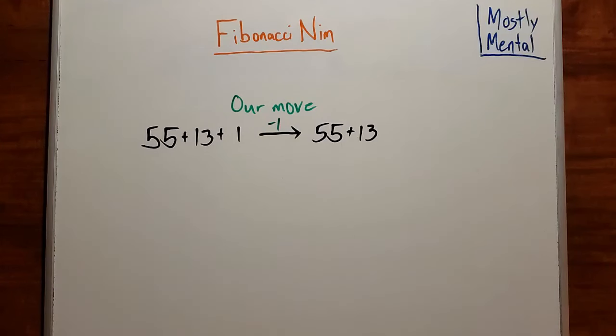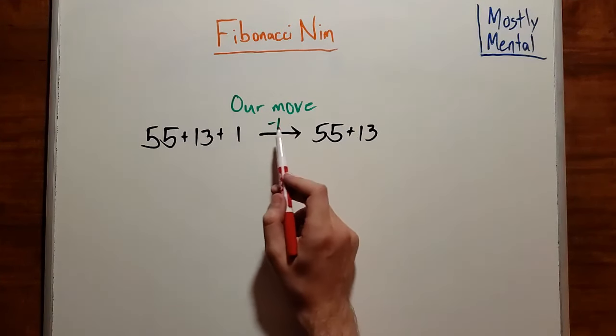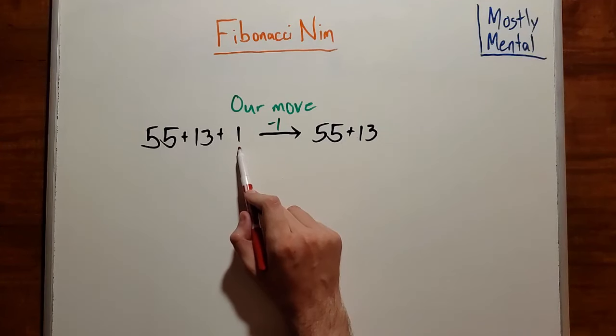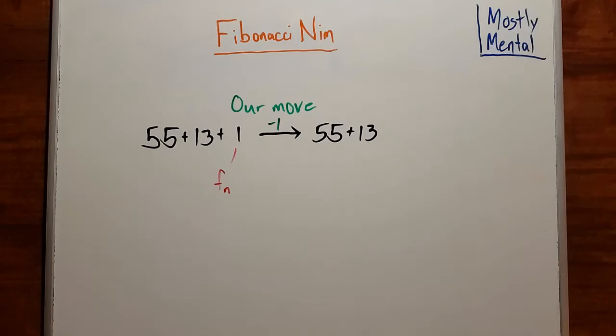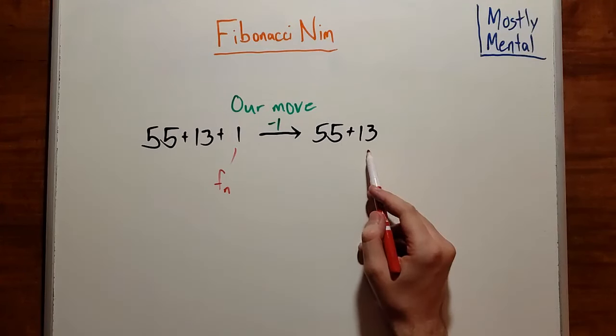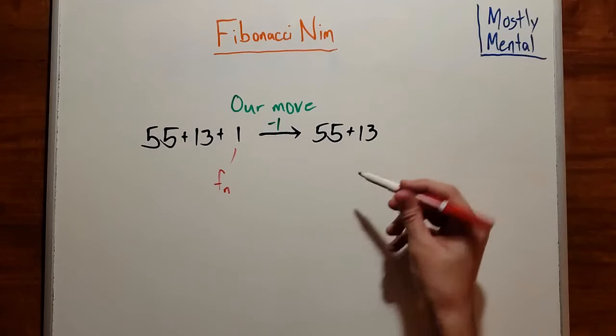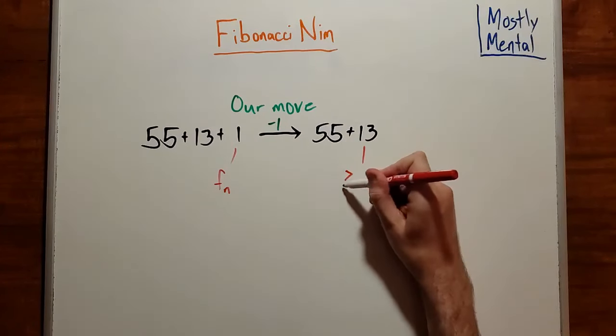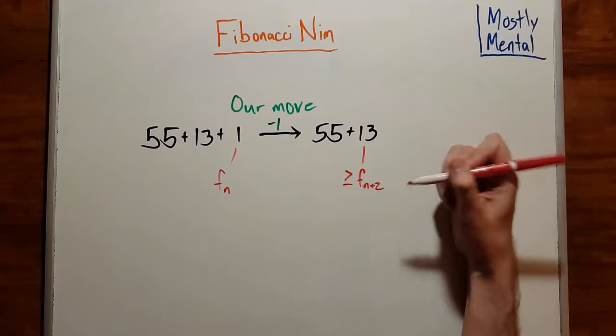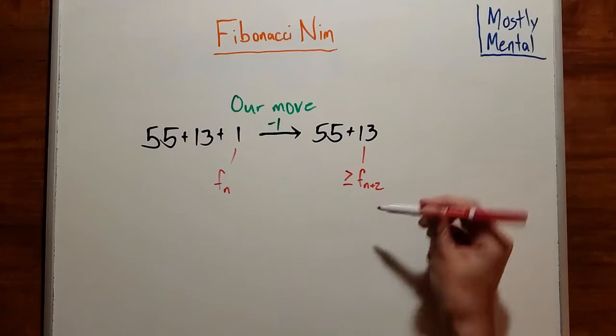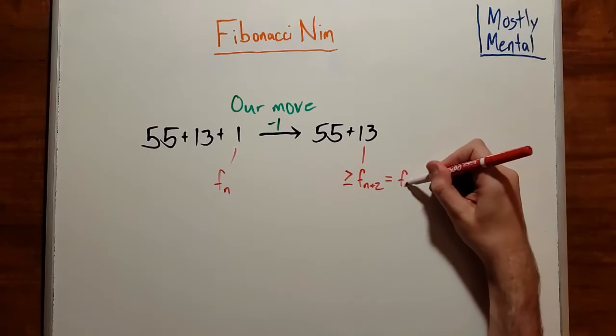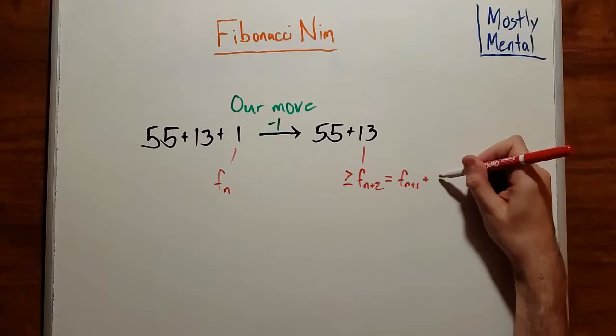Well, when we hand the position to the opponent, we've just made a move where we took away the smallest Zeckendorf term. Let's call that f_n. And the Zeckendorf terms are non-consecutive Fibonacci numbers, so the smallest remaining term must be at least two Fibonacci numbers larger, so it's at least f_{n+2}. And these are Fibonacci numbers, so f_{n+2}, by definition, is f_{n+1} plus f_n.